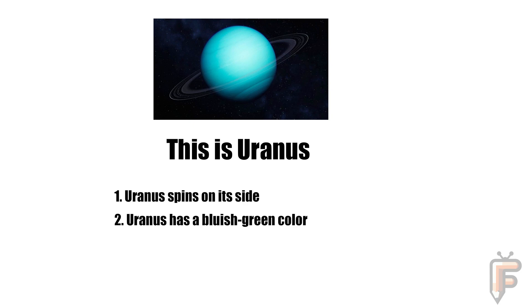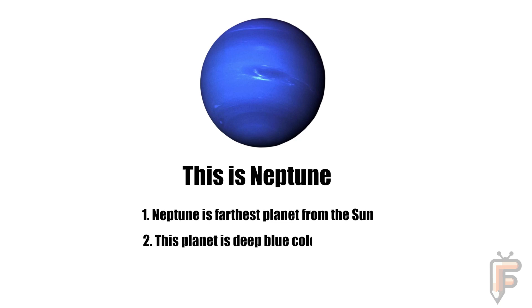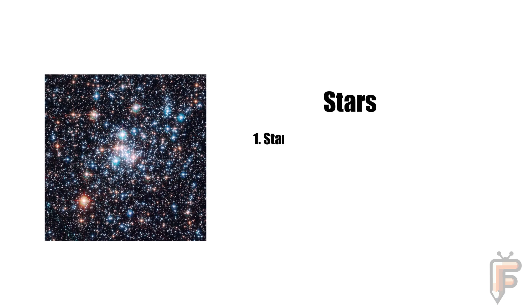This is Neptune. Neptune is the farthest planet from the Sun. This planet is deep blue in color. Neptune is very windy with big storms.